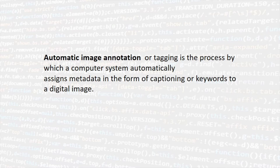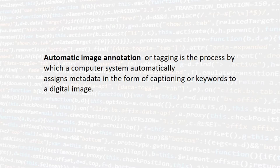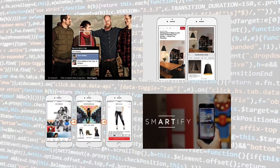Automatic image annotation or tagging is the process by which a computer system automatically assigns metadata in the form of captioning and keywords to a digital image. This is something that's really built for libraries — we've got a lot of images and we need them tagged for discoverability. You come across automatic image tagging in everyday life: Facebook does it all the time, that's how it works out who to tag in your photos. There are other applications such as Instagram and Pinterest, all based on image recognition — offering things for sale, helping you find similar images.